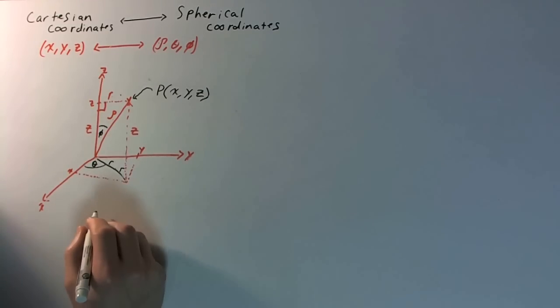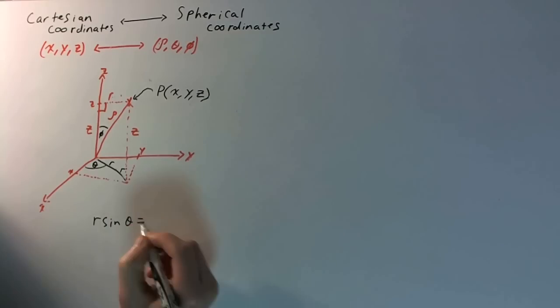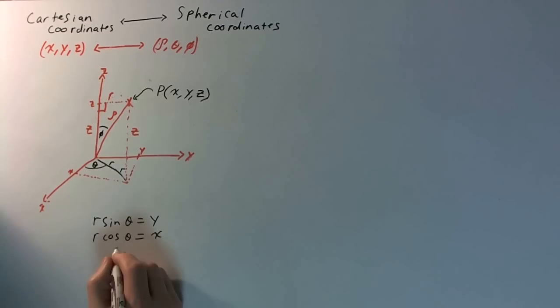So we know that r times the sine theta is going to be equal to y. We know r times the cosine theta is going to be equal to x. And also, in this case, z is going to be equal to z.